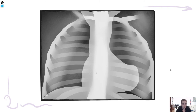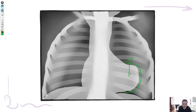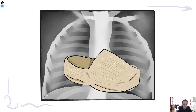So tetralogy of Fallot is in fact not a tetralogy but a single malformation with four secondary changes. On x-ray, the heart has a typical shape — the apex is slightly lifted, resembling a wooden club shoe. This coeur en sabot shape is the classic radiological appearance of tetralogy of Fallot.